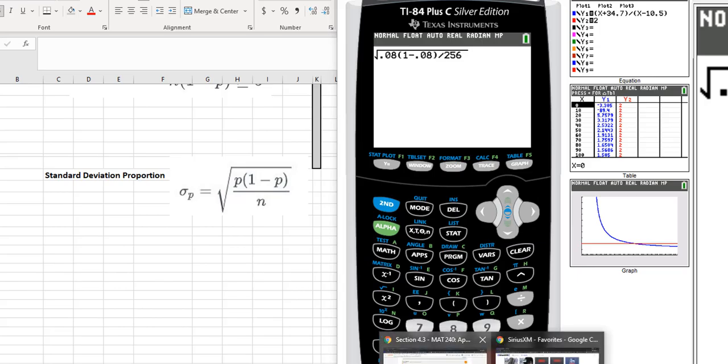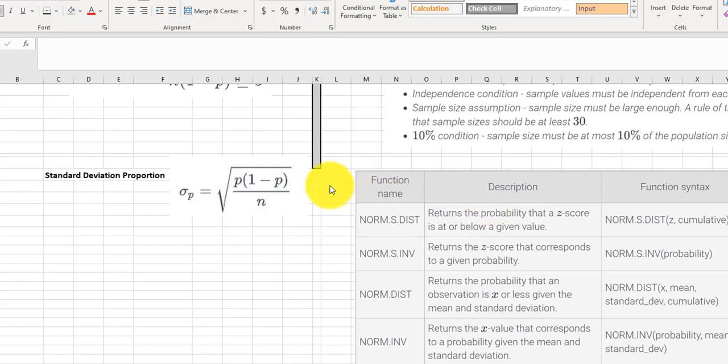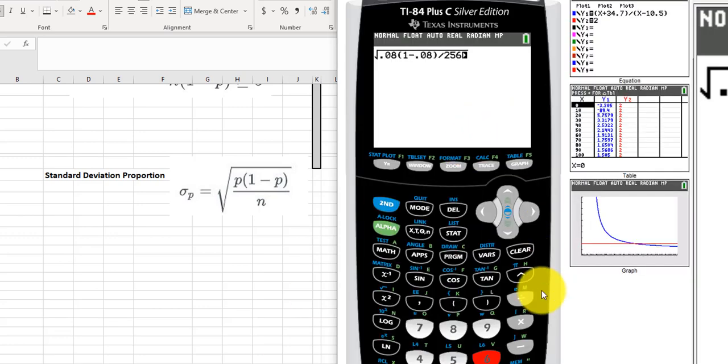And just double checking my numbers, right, p was 8%, 256, so we're looking good there. So pull my calculator back up. I press enter. So if we go three decimal places, we would have 0.017. 0.017, right, because we're going to round to three decimal places, 0.017.